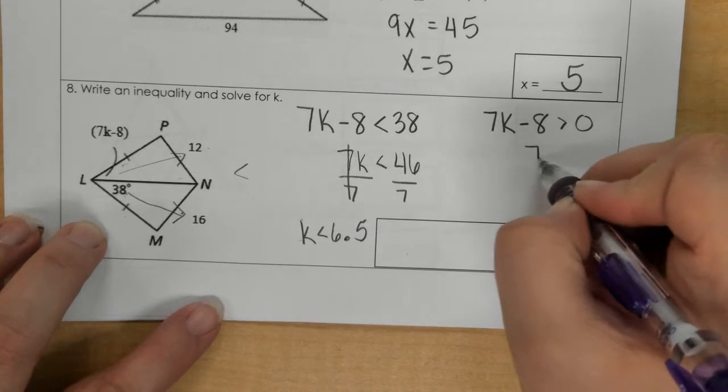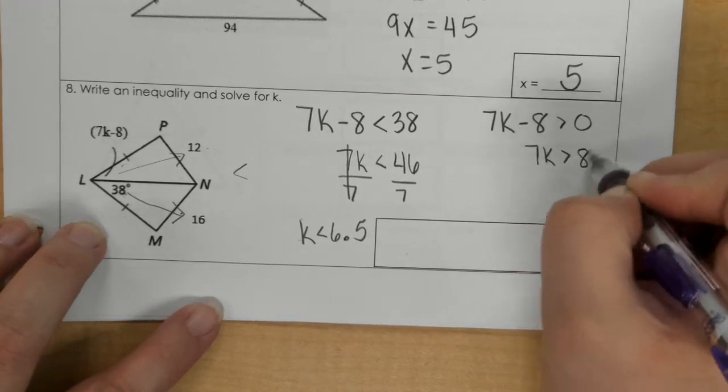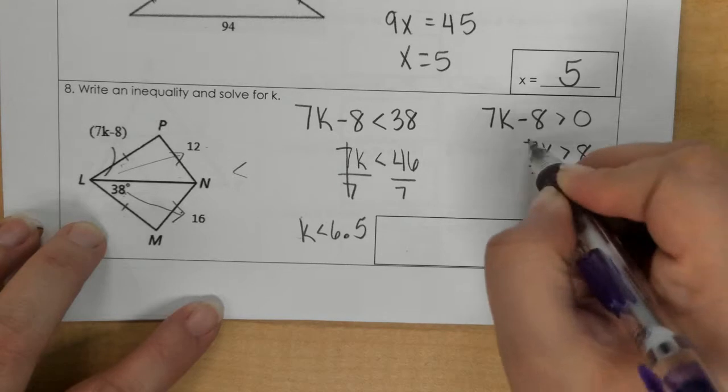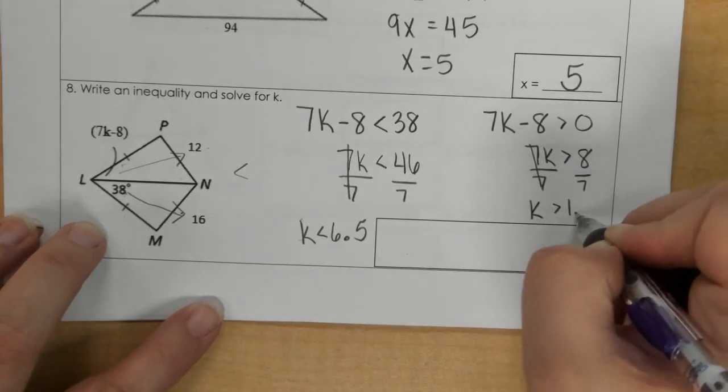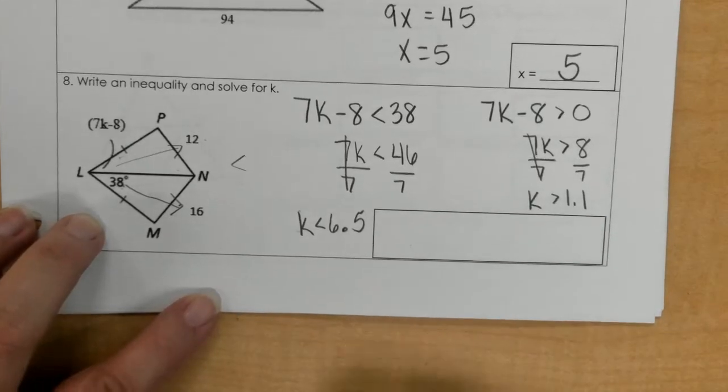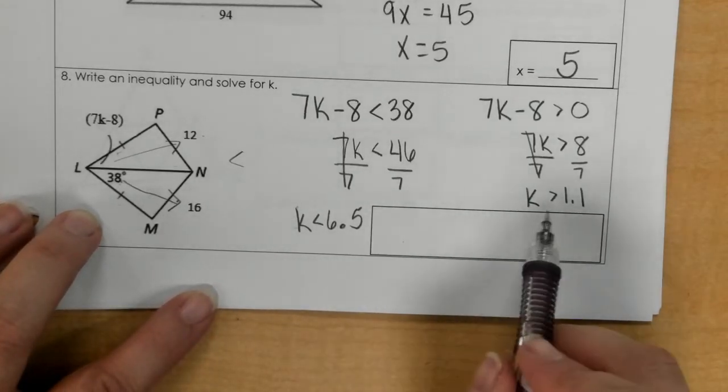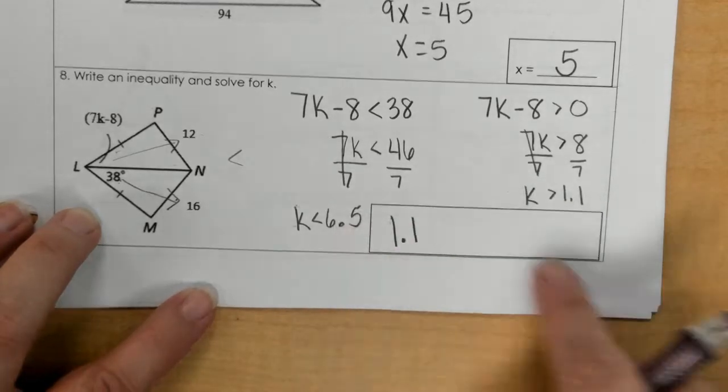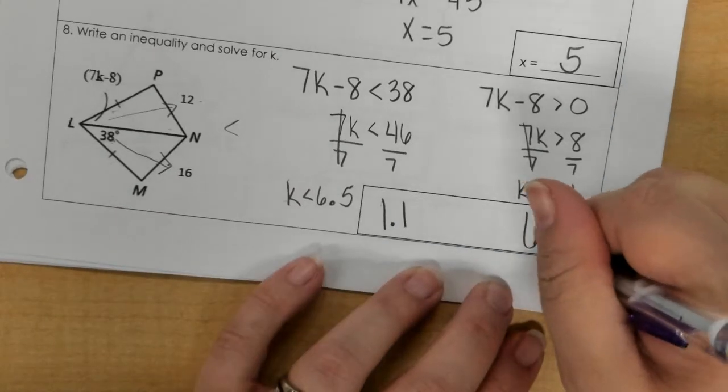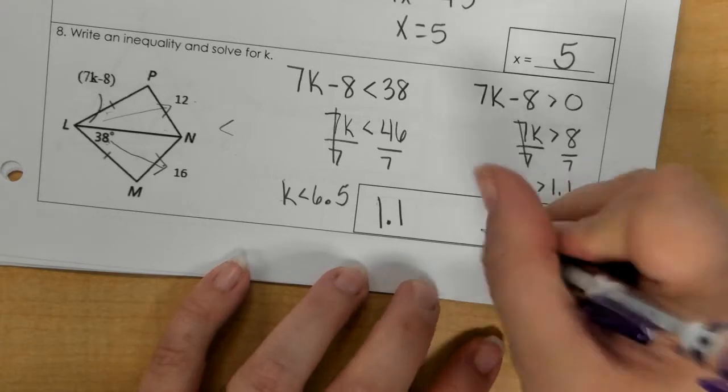Here, if I add 8, we get 8, and then divide by 7, we get 8 sevenths, but this also can divide to 1.1. So I find the smaller number, which is 1.1, and that goes first. The bigger number goes at the end, and the variable goes in the middle.